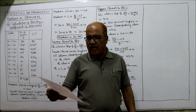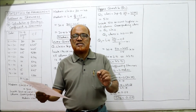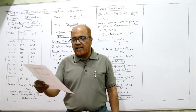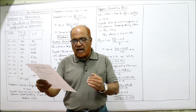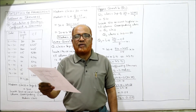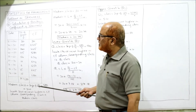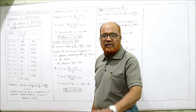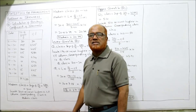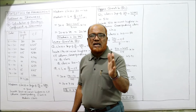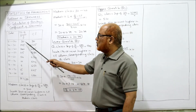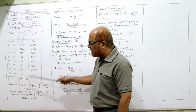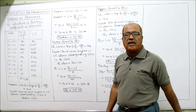The sixth problem asks to compute Bowley's coefficient of skewness from the following data — this is the last problem on Bowley's method. A continuous series is given: sales in rupees (thousands) ranging from 10–20 up to 90–100, with the number of firms as frequency. Cumulative frequencies are calculated: 30, 30+195=225, 225+240=465, 465+115=580, and so on.